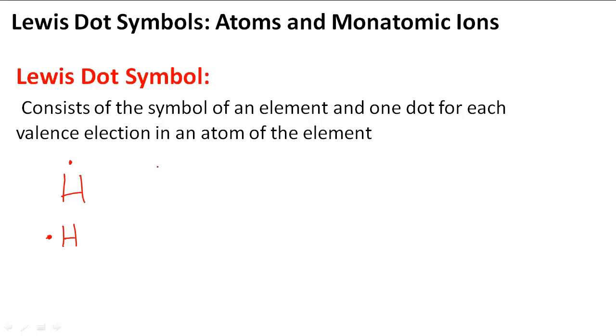When we form ions, monatomic ions, when we form H+, we would write H like this with a plus on the side to indicate that H has lost an electron.